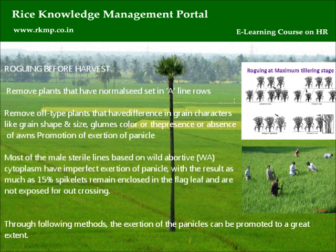Roguing before harvest: remove plants that have normal seed set in A-line rows, and remove off-type plants that have differences in grain characters like grain shape and size, glume color, or the presence or absence of awns. Promotion of exertion of panicle: most of the male sterile lines based on Wild Abortive (WA) cytoplasm have imperfect exertion of panicle, with the result that as much as 15% of spikelets remain enclosed in the flag leaf and are not exposed for outcrossing. The following methods can promote exertion of the panicles to a great extent.